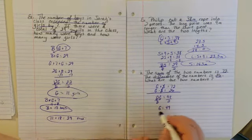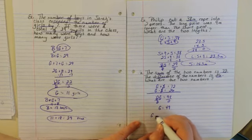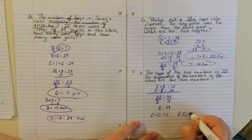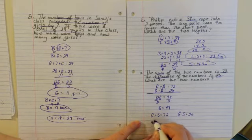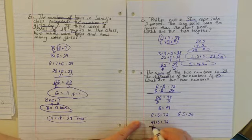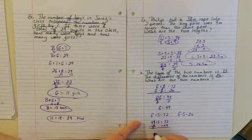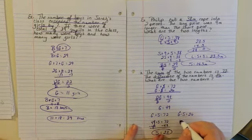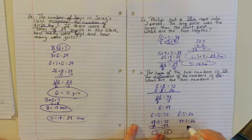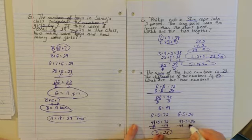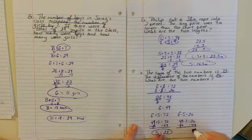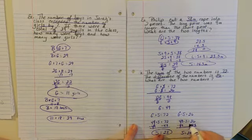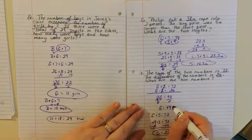If the greater number is 49, we plug this back into both equations and solve for the smaller one. From the first equation: 49 plus S equals 72, subtract 49, and S equals 23. From the second: 49 minus S equals 26, so S equals 23. So those are your answers.